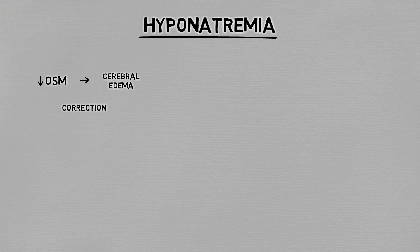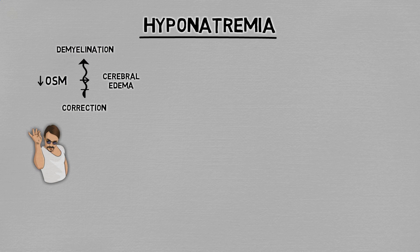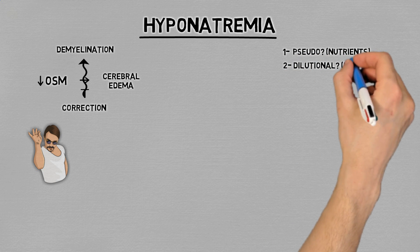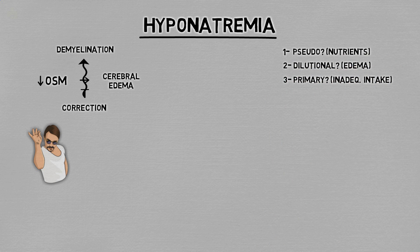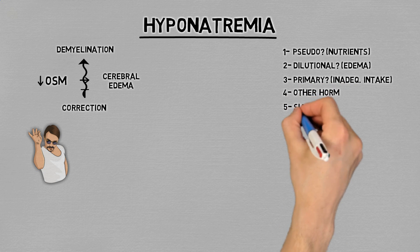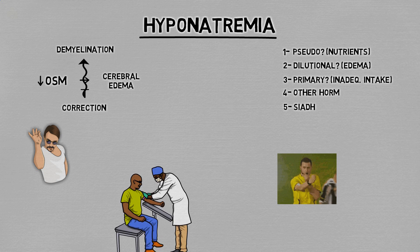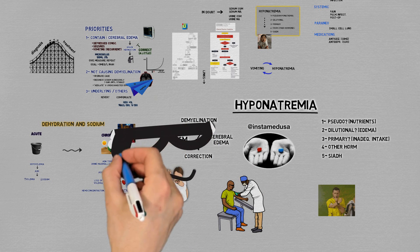Quick overview: hyponatremia is blood with low sodium concentration. The number one problem is causing cerebral edema, and when you try to correct it, you can run into the number two problem, which is losing control and causing demyelination syndrome. If you see someone with hyponatremia, think: pseudohyponatremia — remember the nutrients; dilutional hyponatremia — think of the edematous causes; are they drinking too much water, eating too little solutes, acutely dehydrated, or using diuretics? If the answer is no to everything, order thyroid and adrenal hormones, and if they're okay, you can finally say it's SIADH. I hope this simplified approach will make it a little easier when managing patients and exams.